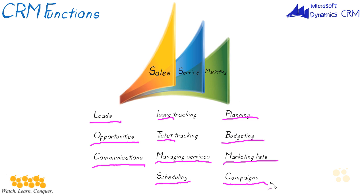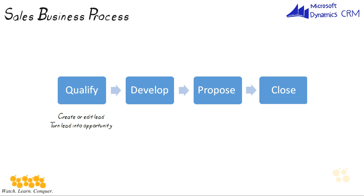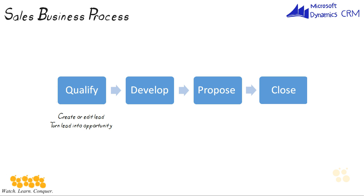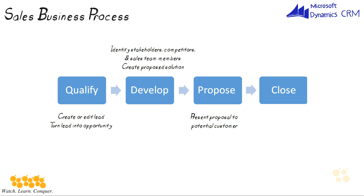Let's look at the four stages of the sales business process. The first stage is Qualify — creating or editing leads and turning a lead into an opportunity. The second stage is Develop — identifying stakeholders, competitors, and who on the sales team is responsible, then creating a proposed solution. The third stage is Propose — presenting the proposal to the potential customer. The fourth stage is Close — filling orders, preparing invoices, and sending follow-up messages to the customer.